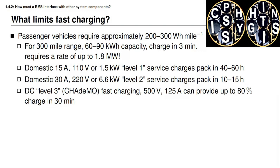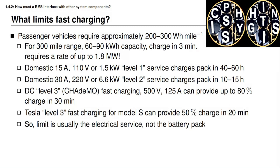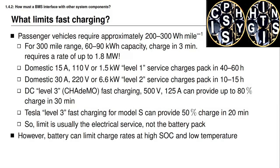Level three charging presently exists in multiple forms. One uses direct current and operates up to about 500 volts and 125 amperes, and can charge a battery pack up to about 80% state of charge in about 30 minutes. Tesla has implemented their own proprietary level three fast charging system for the Model S, which can provide about 50% state of charge in about 20 minutes. In most cases the limit to how quickly we charge is not truly the battery chemistry but the electrical service available, though the battery can also limit charge rates especially at low temperatures and at high states of charge.